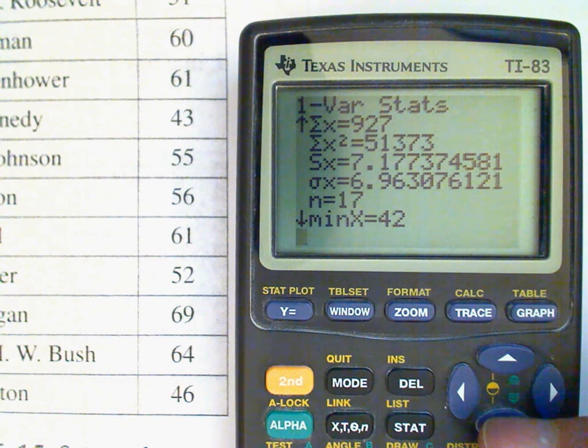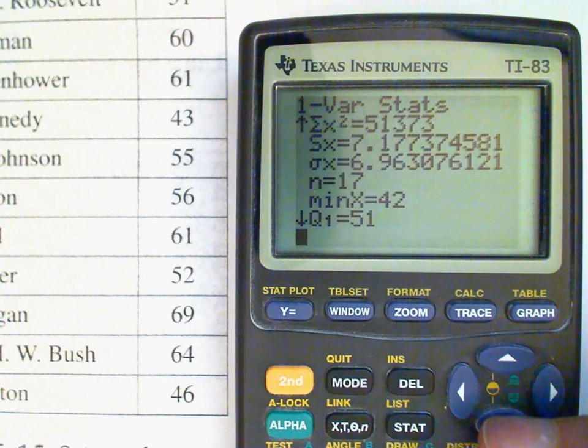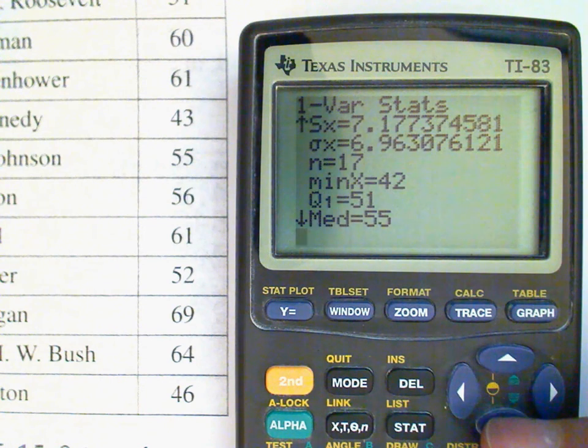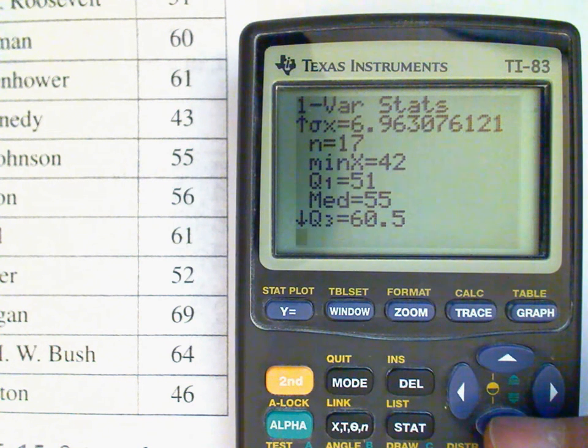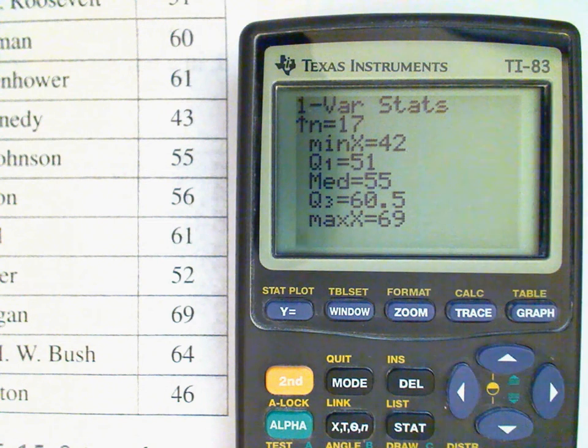And there we see the minimum value, there's q1, there's the median value, there's q3, and there's the maximum value.